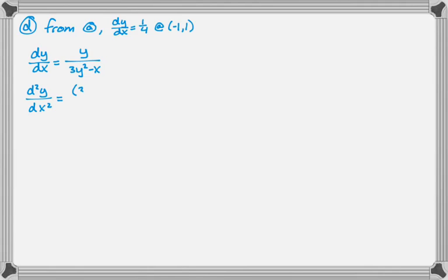So it's going to be the bottom, 3y squared minus x, times the derivative of the top, which is dy dx, minus the top, which is y, times the derivative of the bottom. So that's going to be 6y dy dx, don't forget the chain rule there, minus 1, all over the bottom squared. So I've got that, and now I have a lot of stuff to plug in.